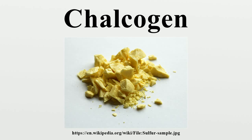Gaseous sulfur is a mixture of diatomic sulfur and eight-atom rings. Selenium has at least five known allotropes. The gray allotrope, commonly referred to as the metallic allotrope despite not being a metal, is stable and has a hexagonal crystal structure. The gray allotrope of selenium is soft, with a Mohs hardness of two, and brittle. The four other allotropes of selenium are metastable, including two monoclinic red allotropes and two amorphous allotropes, one of which is red and one of which is black.